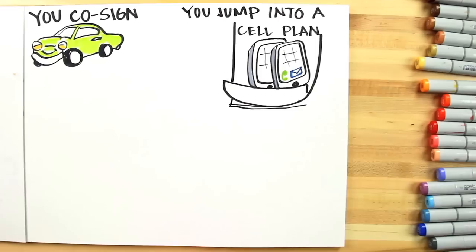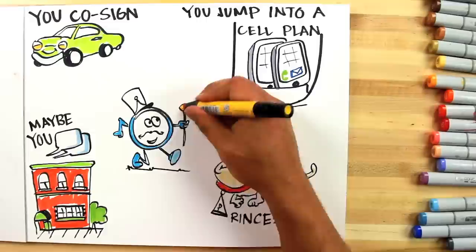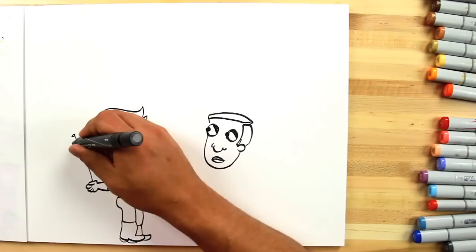Further, you co-sign on a car for them. You jump into a shared cell phone plan. You become the proud parents of Princess. Maybe you talk about moving into an apartment together. And time marches on.